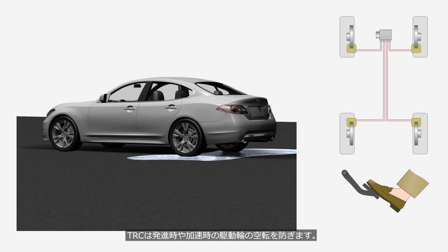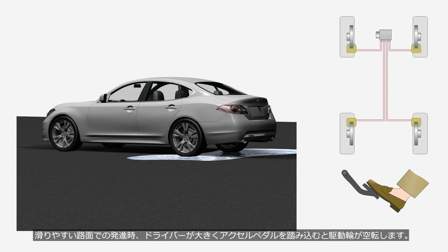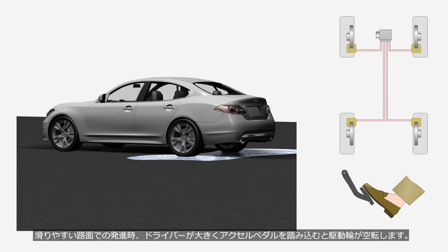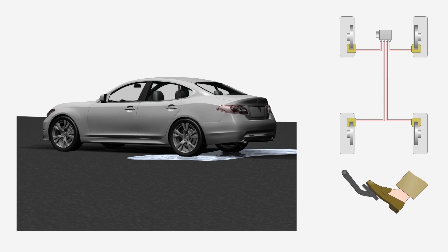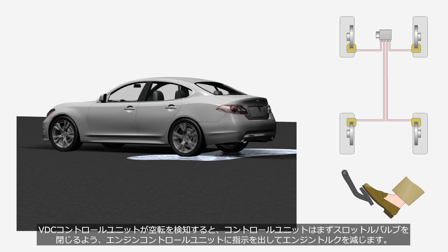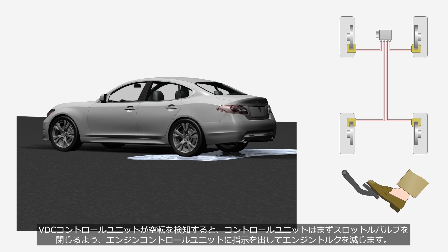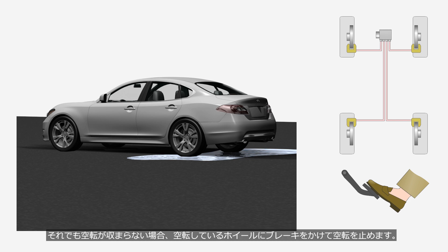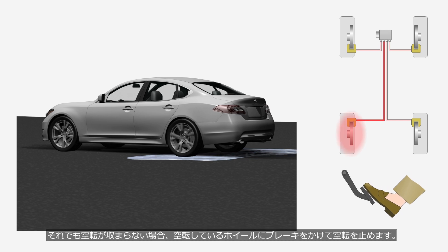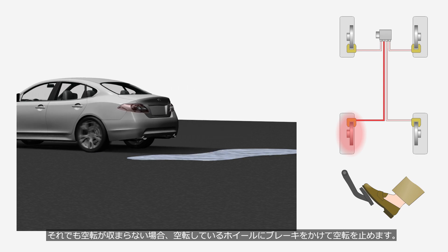TRC prevents wheel spin during starting and acceleration. When starting on a slippery road surface, if the driver depresses the accelerator pedal too hard, the drive wheels may spin. When the ABS control unit detects wheel spin, it first instructs the engine control unit to close the throttle valve to reduce engine torque. If wheel spin persists, the control unit applies the brakes to the spinning wheels to stop the wheel spin.